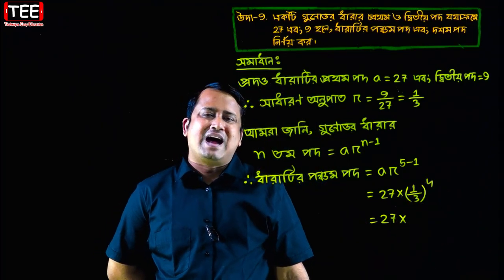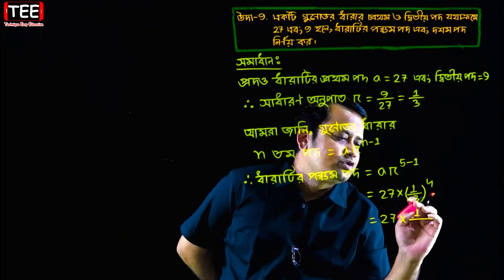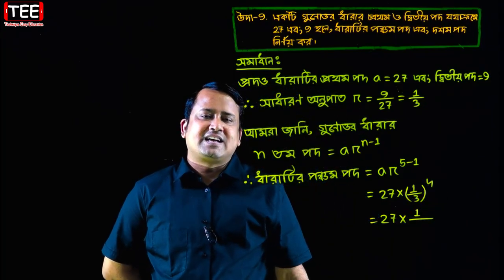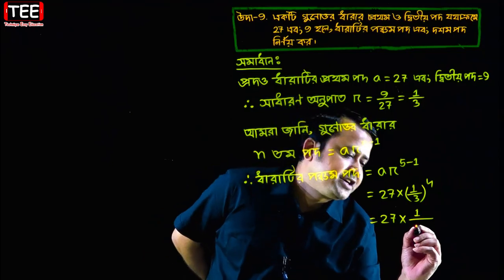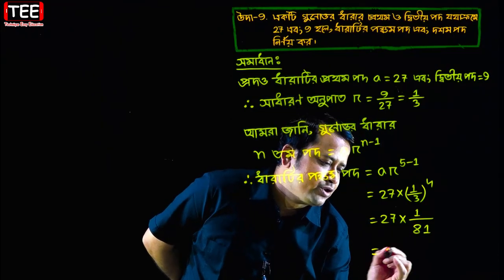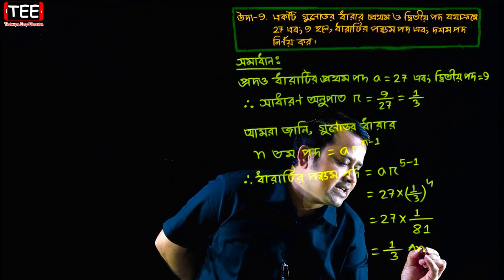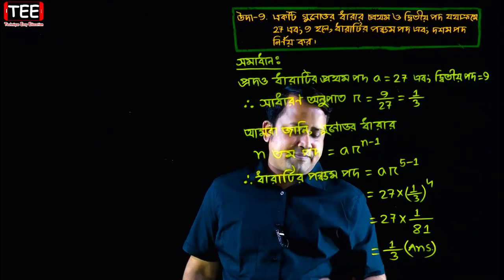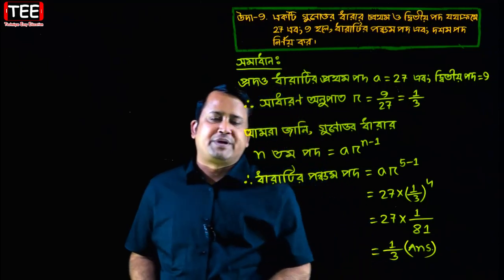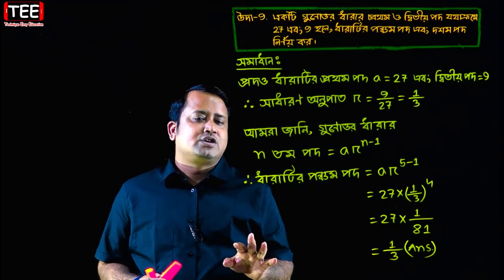For the 4th power: 4 times 1 equals 1; 3 to the power 4 means 4 times 3 multiplied, giving 81. After cancellation, we get 1 divided by 3. So the 5th term comes out to be 1 by 3.